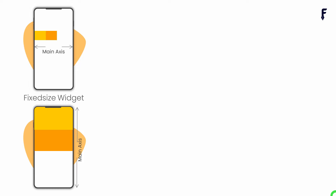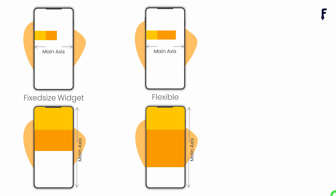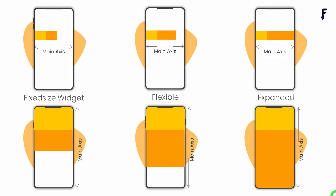The Flexible widget gives a child of a Row or Column the flexibility to fill the available space in the main axis. But unlike Expanded, Flexible does not require the child to fill the entire available space. Let's see this practically.